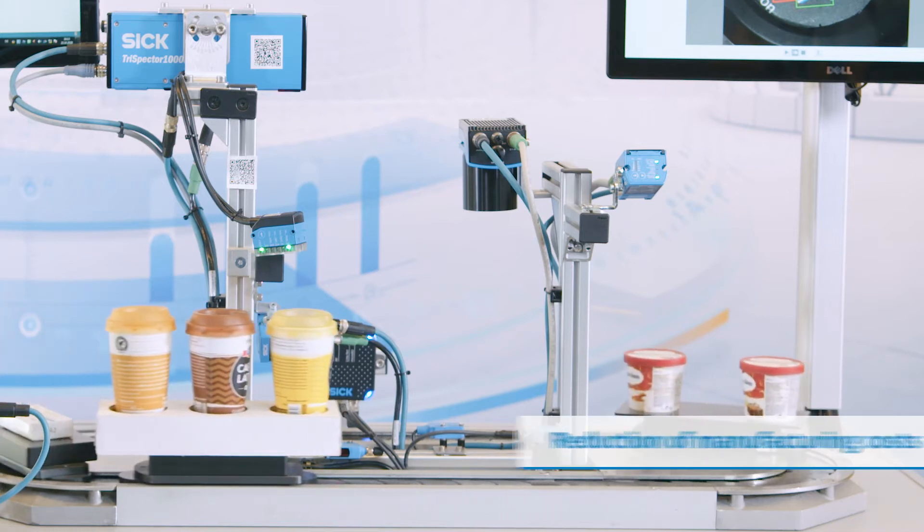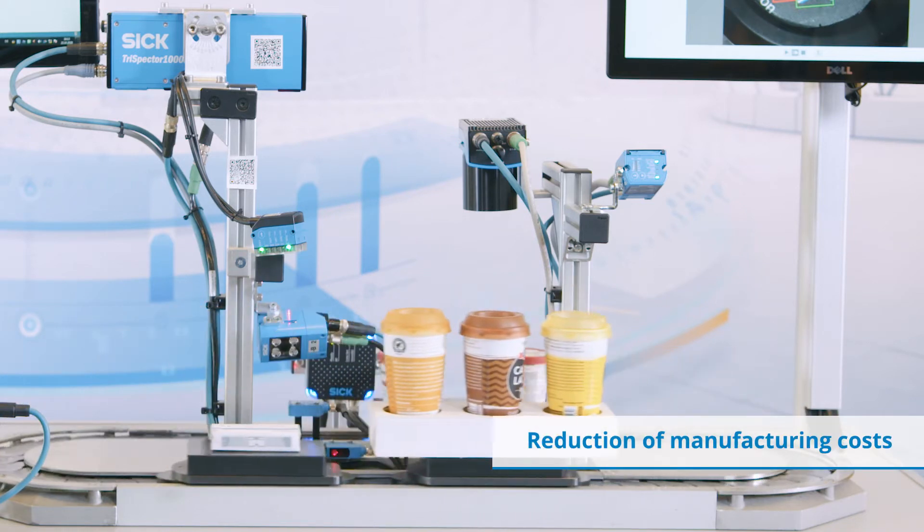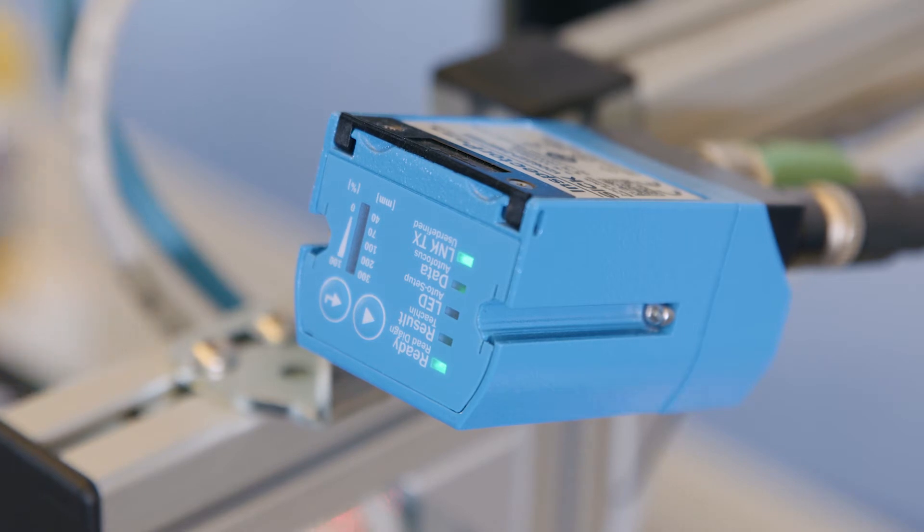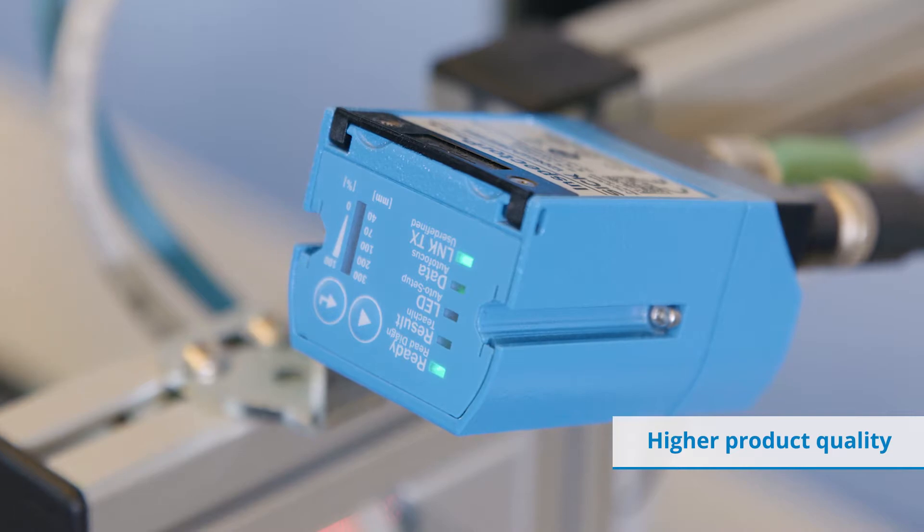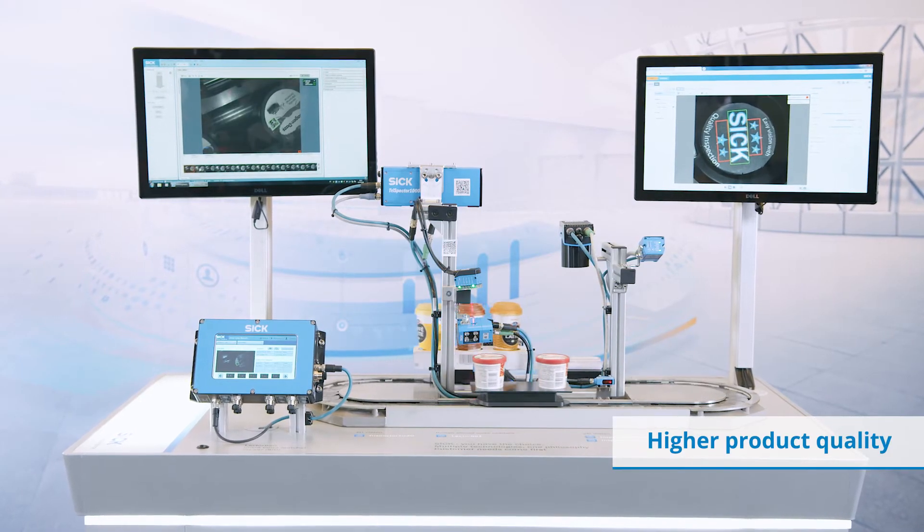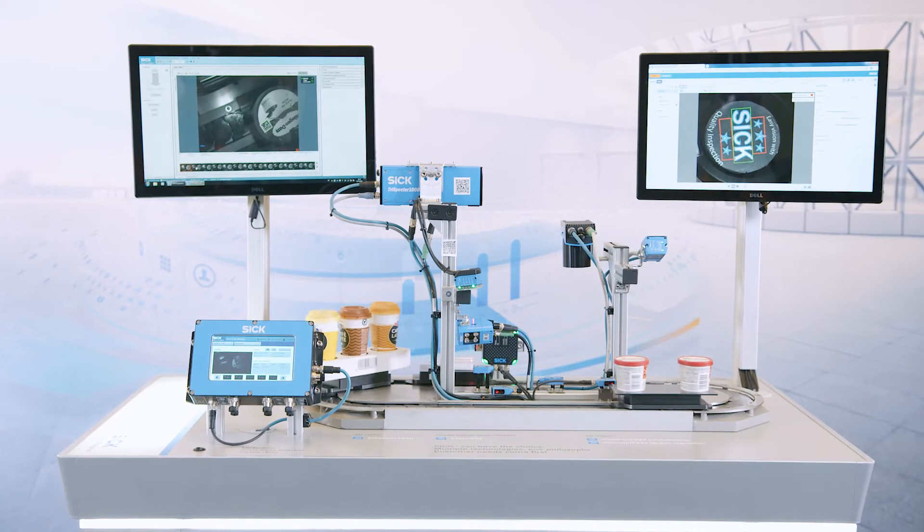This targeted quality inspection also enables you to achieve a higher product quality. A simplified example of this can be seen in this application. In this case, the objective is to check that the logo has been fully printed on the lid of the packaging.